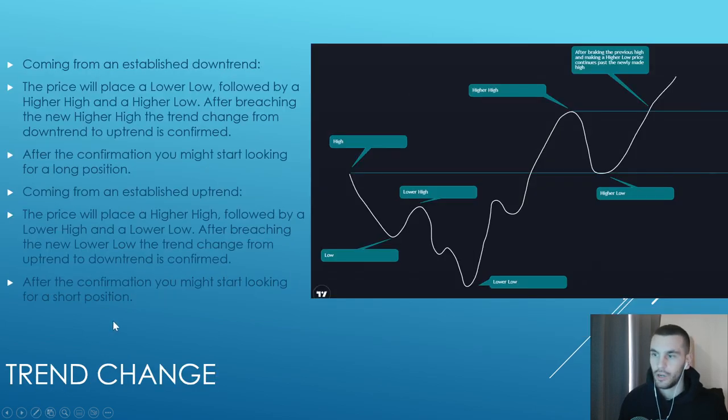About trend change: how do we change the trend? In this example we have a high, we have a low, have a lower high, have a lower low. First, you make an impulsive move up, make a new high compared to this one. Then you make a higher high because you break this high.